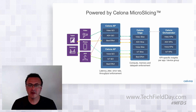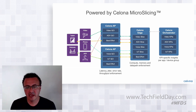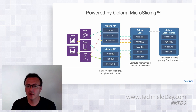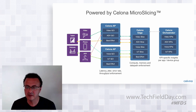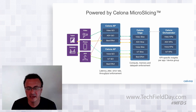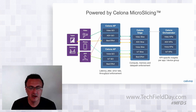The Celona Orchestrator allows individual KPI management. It ensures overall availability and reliability of these individual microslices to achieve guaranteed SLAs so that the whole network automation is achieved.